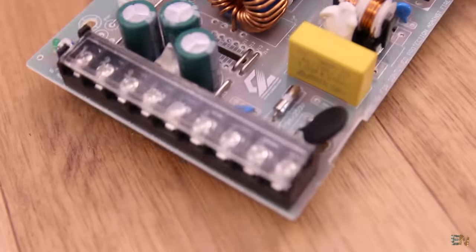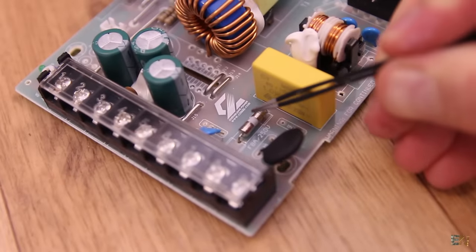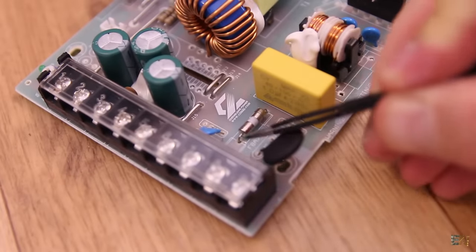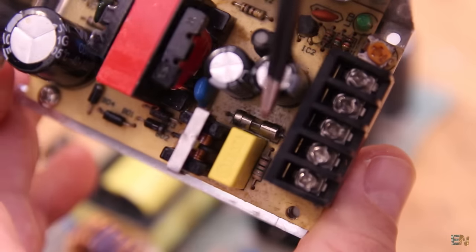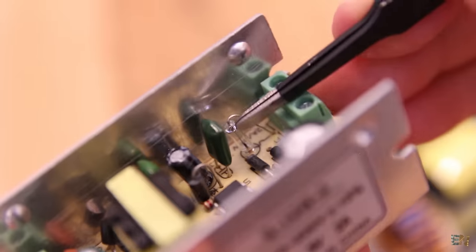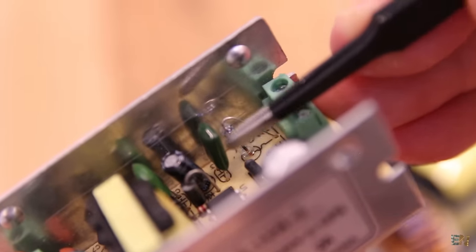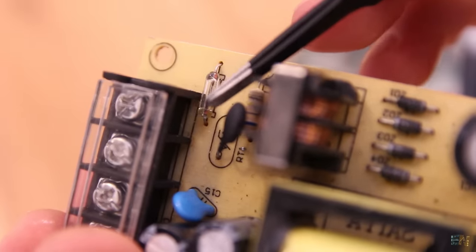So here as you can see, usually we have a safety fuse. All these supplies have some sort of safety fuse at the input so if there is a short circuit, over current and so on, the fuse will blow up and protect the circuit.